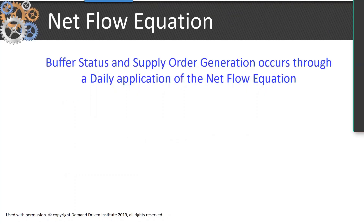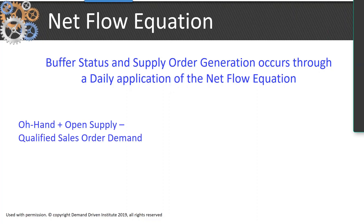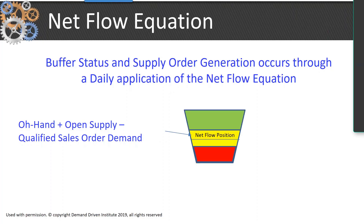This then generates what is called a net flow equation. Buffer status and supply order generation occur through the daily application of this net flow equation, which is basically the DD MRP equivalent of a planned order release. The formula is: quantity on hand plus open supply minus — and here it is — only qualified order demand, not forecast. This calculates the net flow position and then generates a supply order to get back up to the desired buffer level.